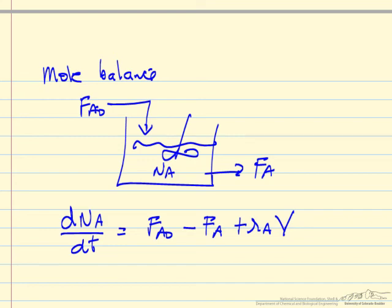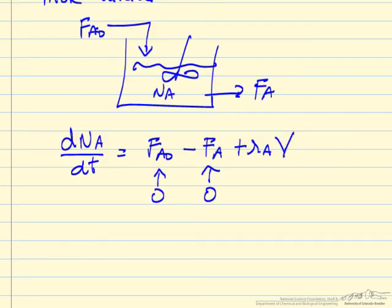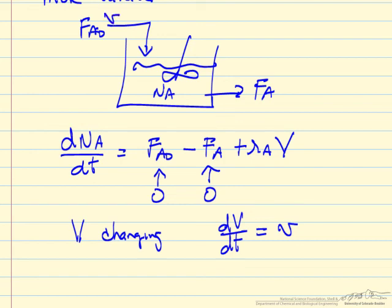So for a given system, for example, this term might be zero, or this term might be zero. And now of course the volume is changing, so we may also end up writing a balance on volume that's related to the volumetric flow rate here coming into the reactor. Let's call that V0.